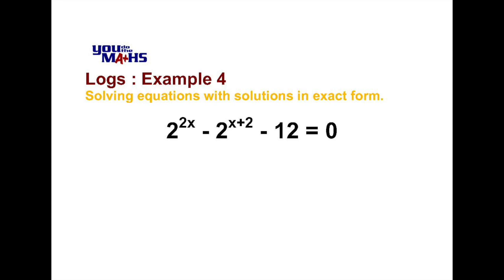In this case it's slightly different to the previous examples because our unknowns are involved in two separate terms. We've got 2 to the power 2x and 2 to the power x plus 2. So we need to think of a strategy that's best to incorporate logs into this equation.